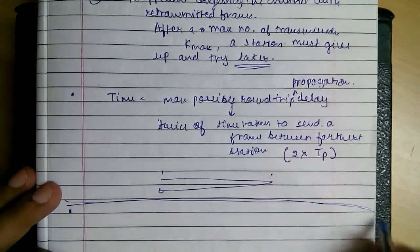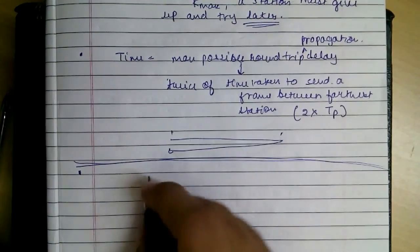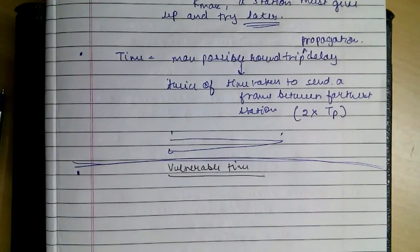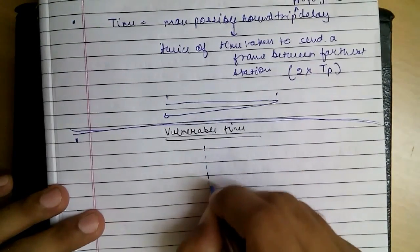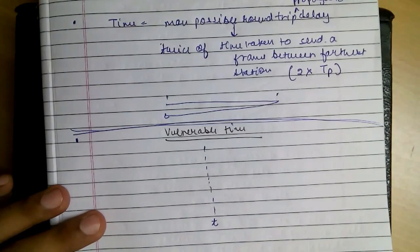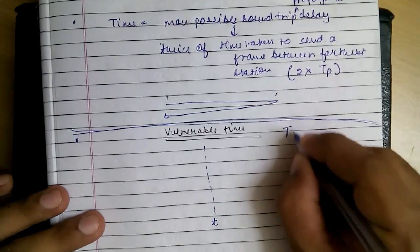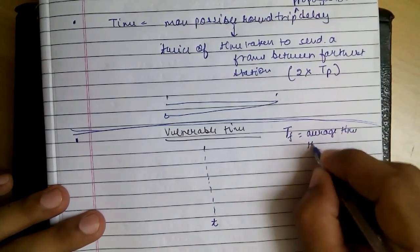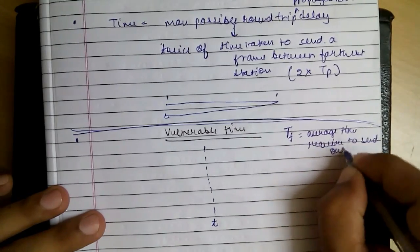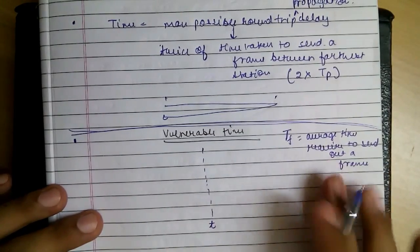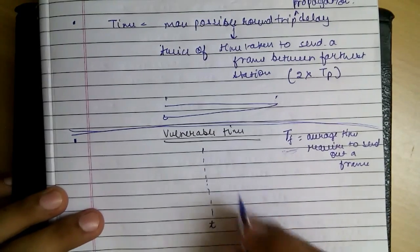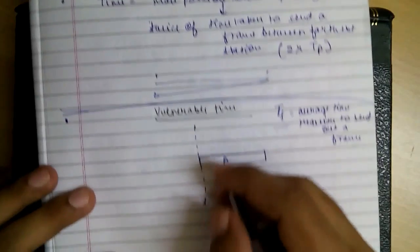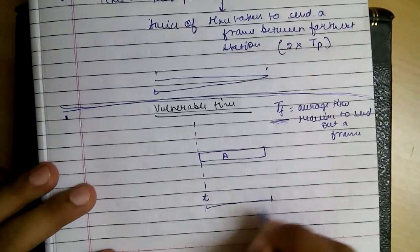To clear the picture further, let's see the concept of vulnerable time. This is some time T and let's define TF to be the average time required to send out a frame. So a frame takes average time that is TF. Let's say at time T the frame A is sent, and as we have defined this is the average time so this will be TF. So this time becomes T plus TF.